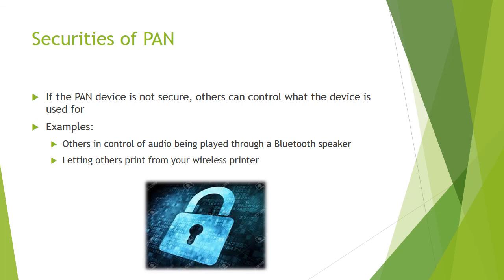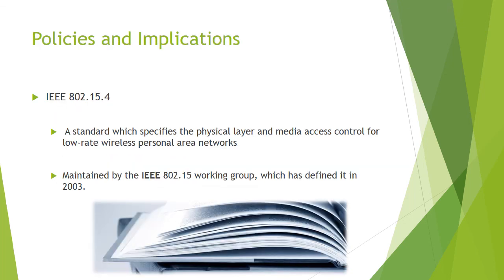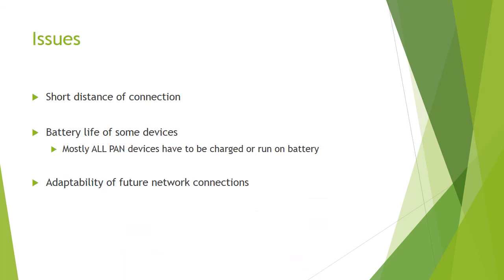Securities of personal area networks: if a PAN is not secure, other users can control your connected device. Some current policies and implications include the IEEE 802.15.4 standard, which specifies the physical layer and access control for low-rate wireless personal area networks. Some issues with PANs include the short distance of connection, which can limit connectivity; potentially low battery life on some devices; and the need to be adaptable to future network connections.